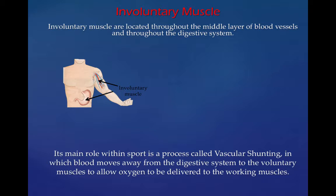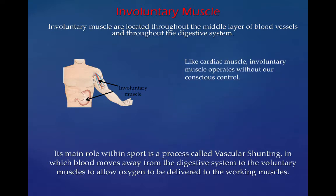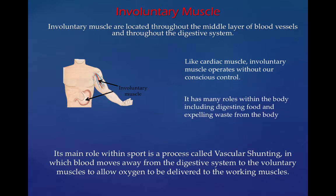So without you thinking, the blood moves from your digestive system to your working muscles so you can provide oxygen to them, so they can work faster and longer. Like cardiac muscles, involuntary muscles operate without our conscious control. They have many roles within the body, including digesting food and expelling waste from the body.